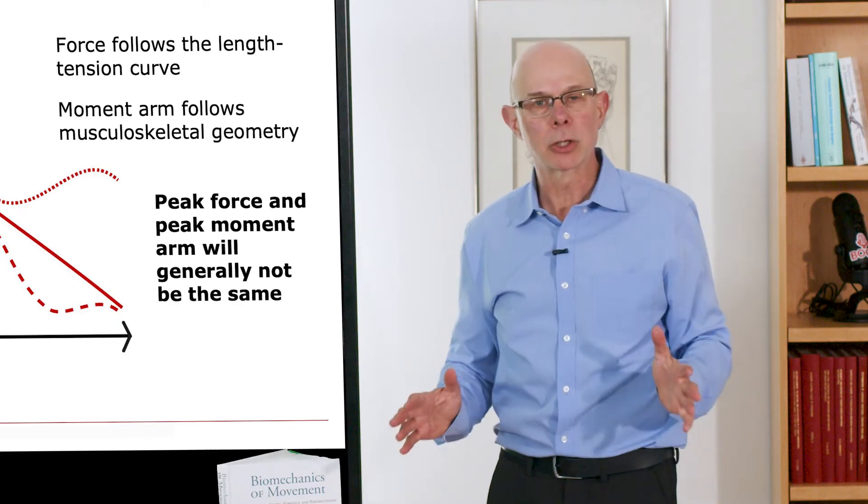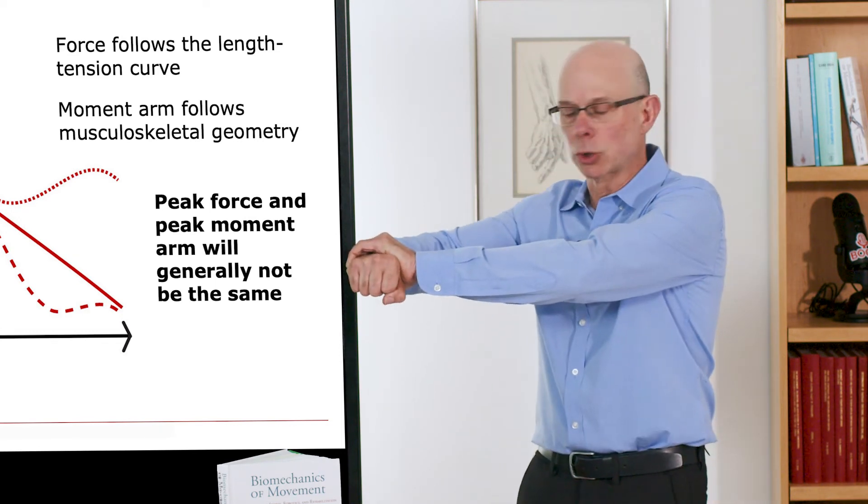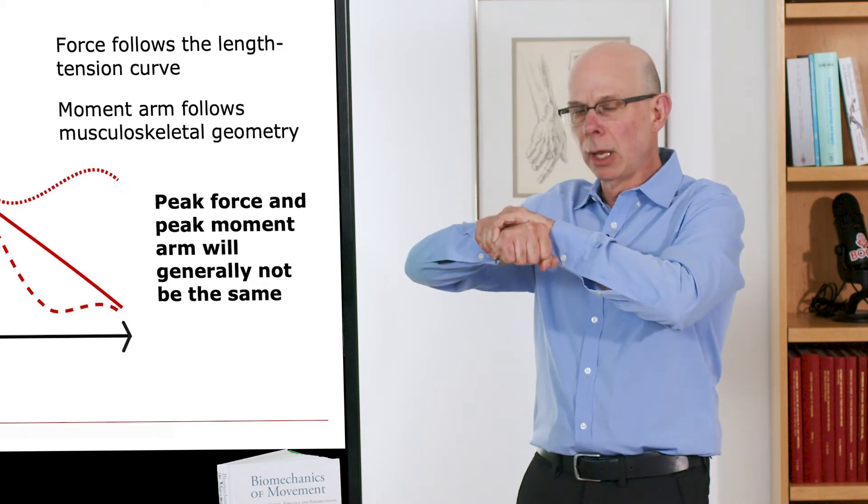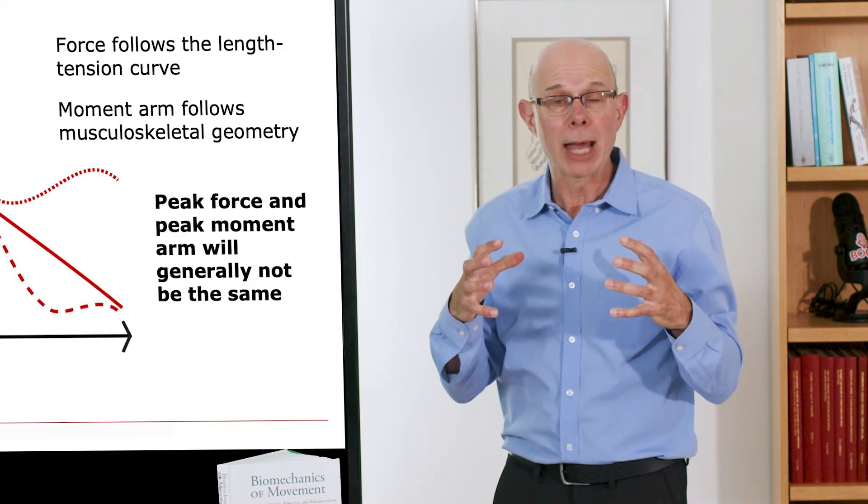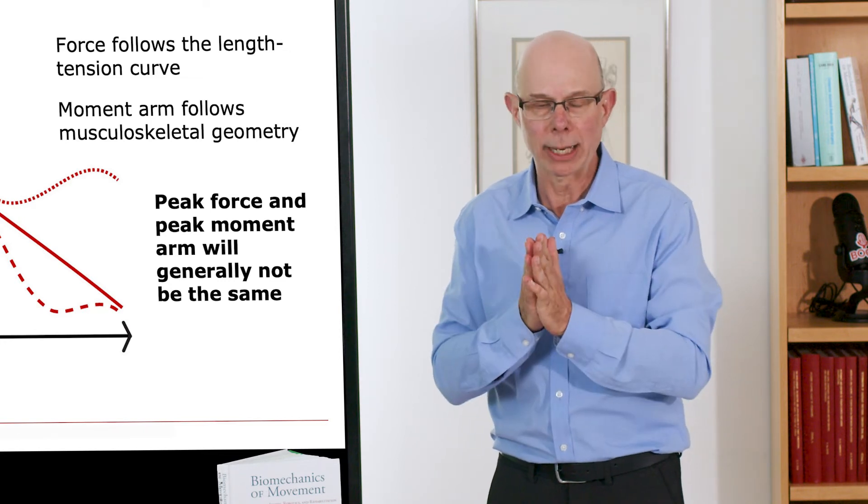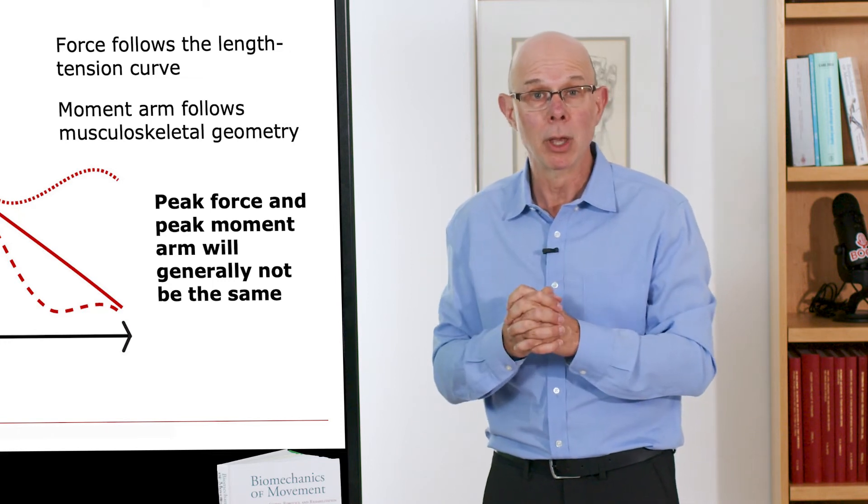This is important because when we test strength in individual subjects, let's say I'm testing elbow flexion strength, I'm going to make a measurement here, a measurement here, a measurement here. I'm going to get an angle at which that moment peaks. We can't assume that that angle is where the muscle is generating its maximum force. It's where the product of force and moment arm are the greatest.